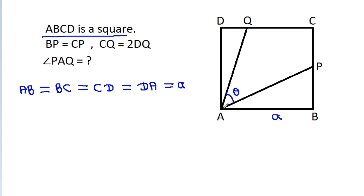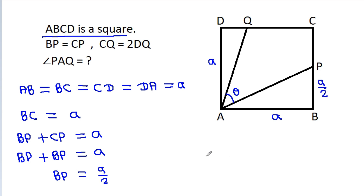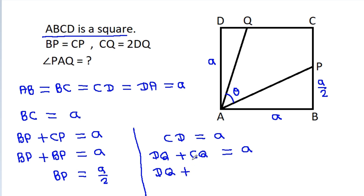AB is a and AD is a. BC is equal to a, and BC is BP plus CP, that is a. So BP plus CP equals a, meaning BP will be a/2. CD is a, and CD is DQ plus CQ, that is a. Since CQ is 2 times DQ, we get DQ plus 2·DQ equals a, so DQ will be a/3.